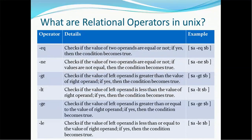GT stands for greater than. It checks if the value of the left operand is greater than the value of the right operand — if yes, then the condition becomes true. LT stands for less than. It checks if the value of the left operand is less than the value of the right operand — if yes, then the condition becomes true.